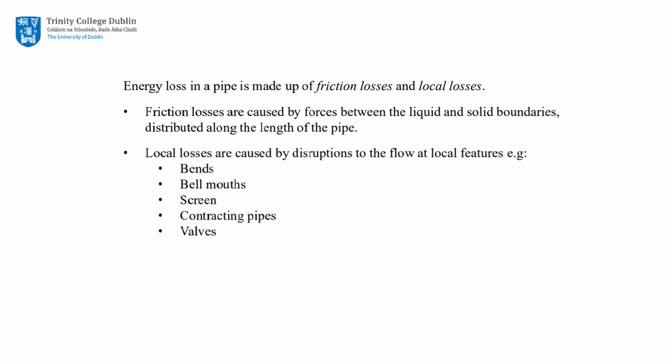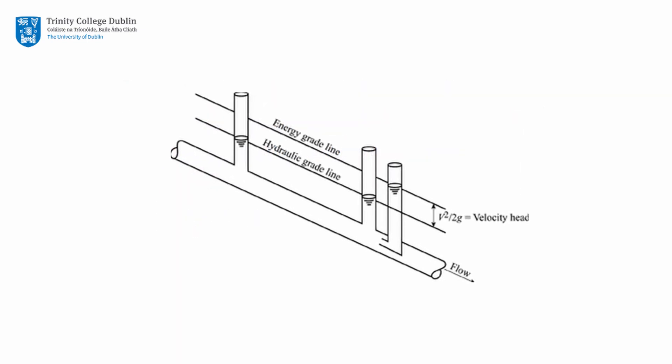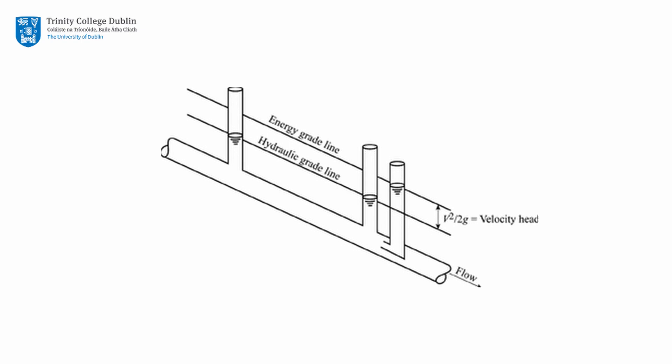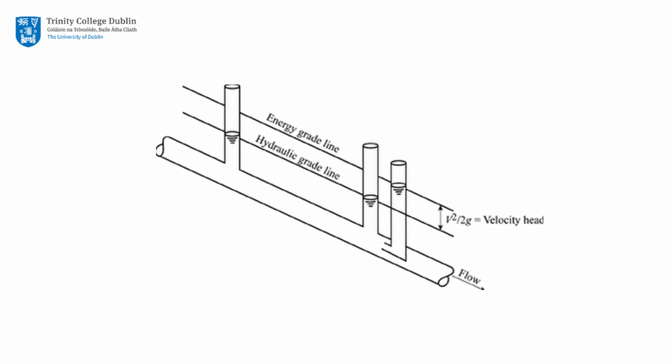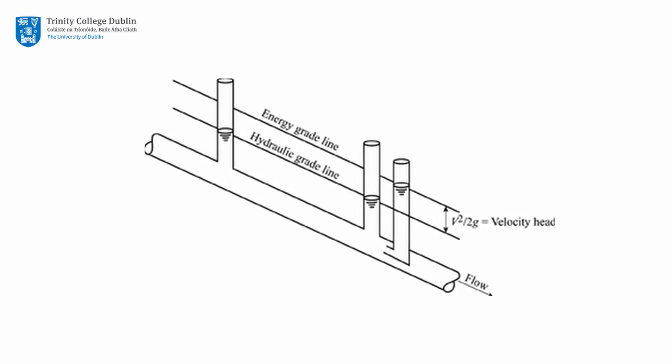Local losses, meanwhile, are caused by disruptions to the flow due to local features such as bends, valves, etc. The hydraulic grade line represents the locus of elevations to which the water would rise if open to atmospheric pressure.